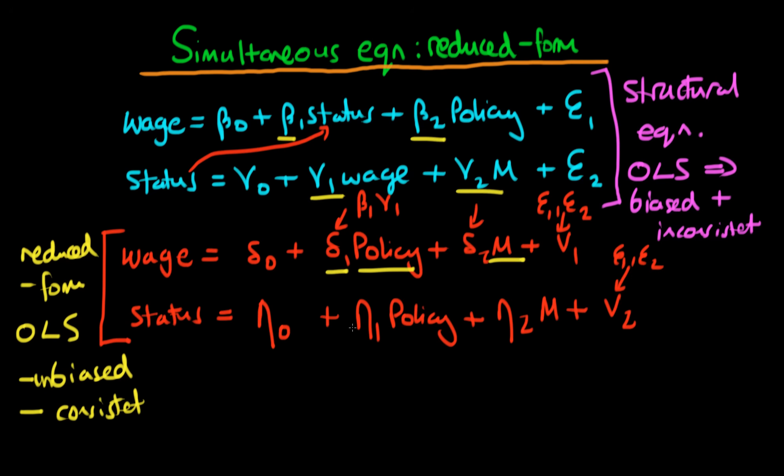So just because we can get delta 1, delta 2 and eta 1 and eta 2 we actually can't get back to our coefficients of interest. And because of that essentially estimating reduced form equations isn't necessarily a way of getting out of this situation because even though we can estimate these equations they don't really tell us that much. So that's kind of the problem with estimating equations when they're in reduced form.